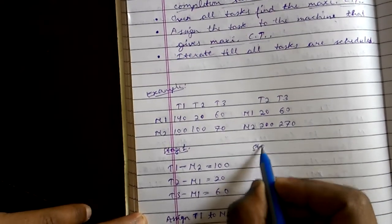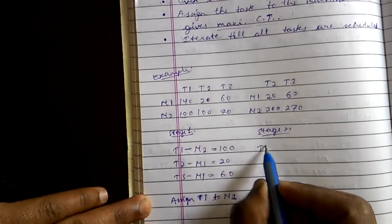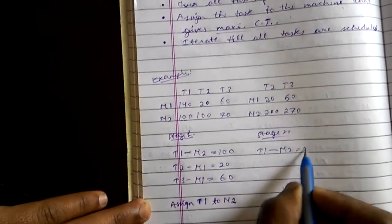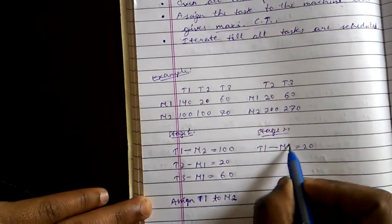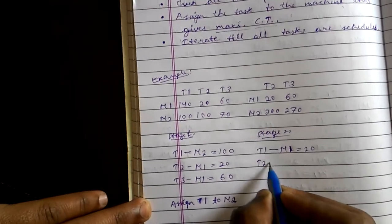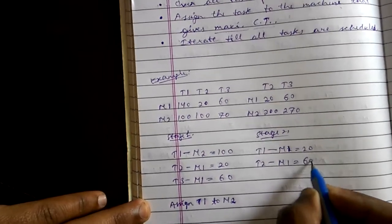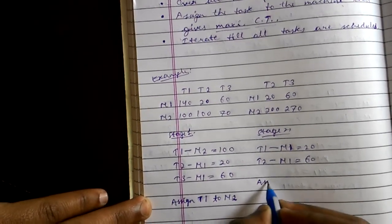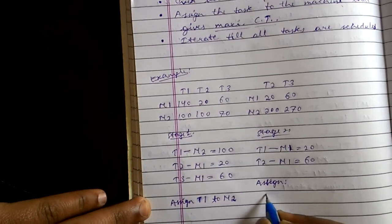Now for stage 2, t3 goes to machine m1 that is 60. Now assign t3 goes to machine m1.